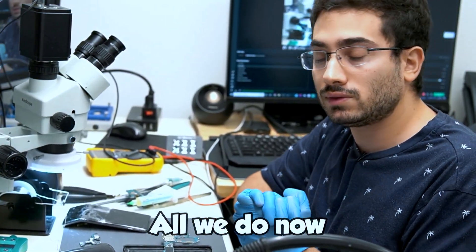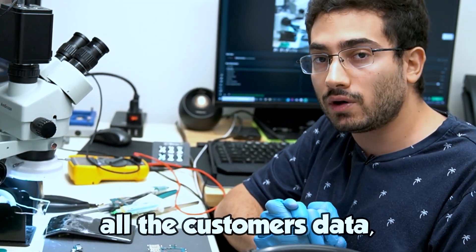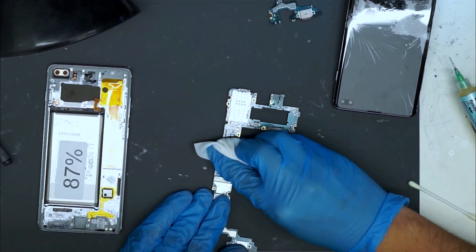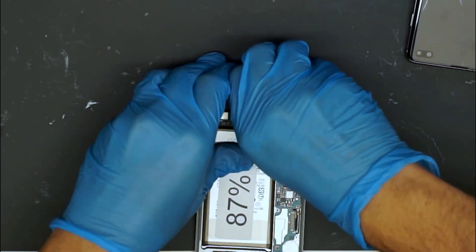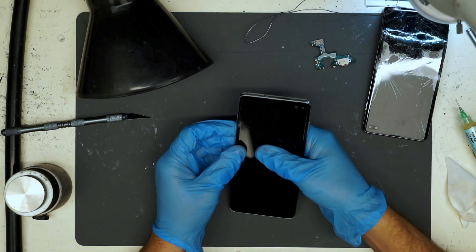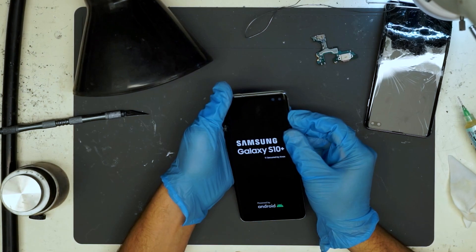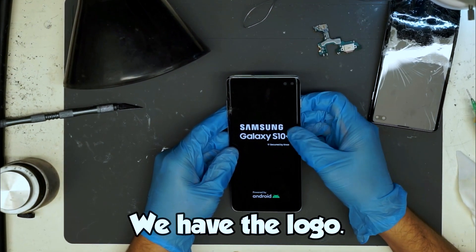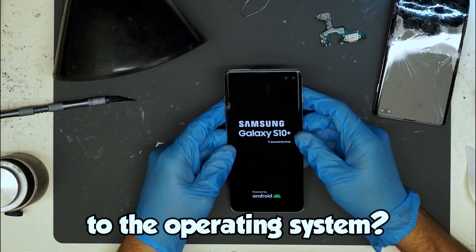All we do now is test the device, and hope it turns on, so that we can recover all the customer's data. Alright, hooking it up to power. And prompt to boot. So far, so good. We have the logo. Can we make it to the operating system?